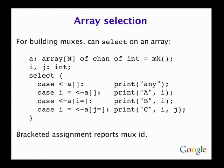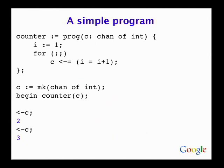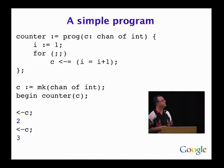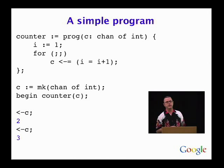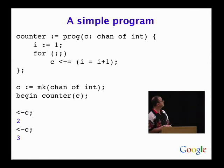Let's actually look at a program in the language. Here we have a proc called 'counter' that receives a channel as a parameter and then in a for loop sends sequential integers to that channel. To invoke it, we create a channel for communication, then begin that proc with that channel as a parameter. When that happens, the first thing the program does is hit the send operator and block, because nobody's waiting for an answer. You can type 'receive from C' and the system will print out 2, then 3, and so on — creating a channel that delivers integers starting from 2.